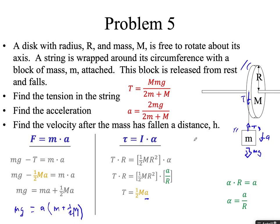For the velocity, use v_final² equals v_initial² plus 2a times delta x. We know the acceleration, so if we plug in h we can solve for the final velocity, though the answer will involve a large number of variables.